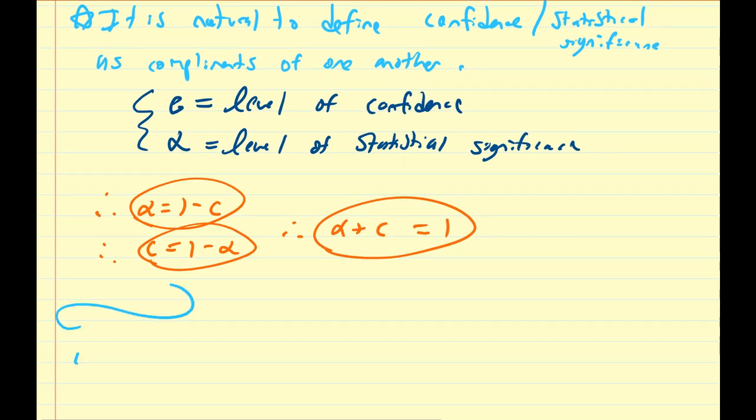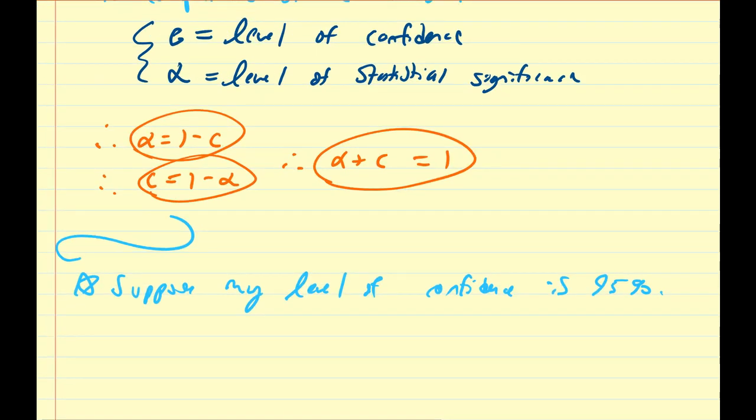So if I were to say, suppose my level of confidence is 95%, so if my level of confidence is 95%, that means my level of statistical significance is going to be equal to 0.05.